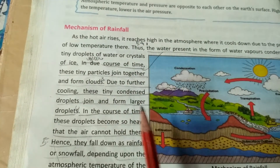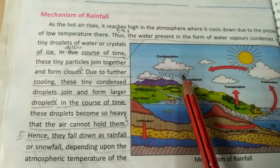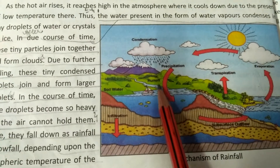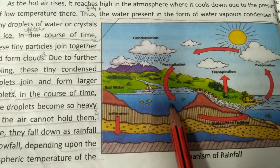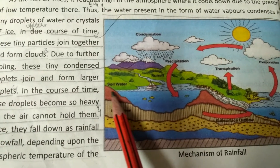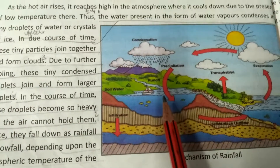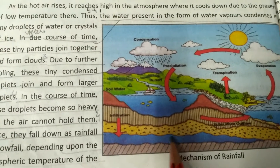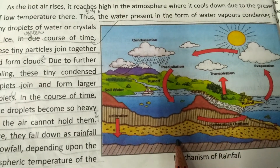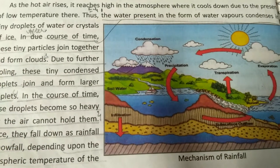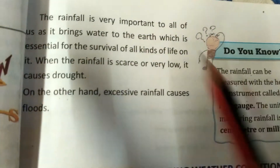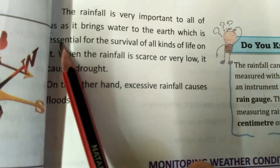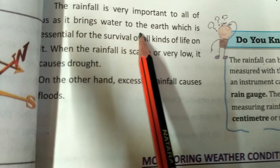After precipitation occurs, there is surface runoff — some water runs on the surface, some water comes from the soil, and some water goes inside the earth, which is known as underground water.